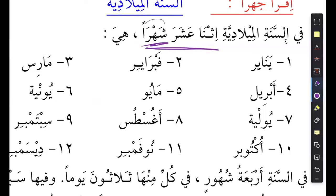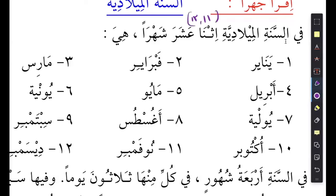It has to be منصوب. With this number it's called عدد مركب. There are a lot of rules. 11 and 12 have different rules — 11 and 12 work like a صفة, so both numbers have to match with the معدود in terms of gender. So إثنى is masculine, عشرة is masculine, and شهر is masculine — all of them have to match.